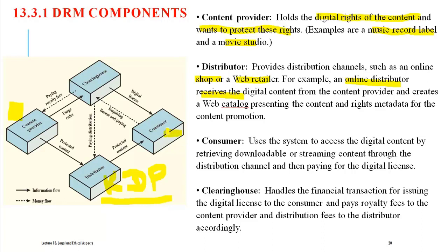Consumers are the users — a user who wants to read a book or watch a video. The consumer pays for a license, and that payment goes to a clearing house. The clearing house handles all financial transactions: it issues digital licenses to consumers, pays royalty fees to the content provider, and pays distribution fees or commission to the distributor accordingly.